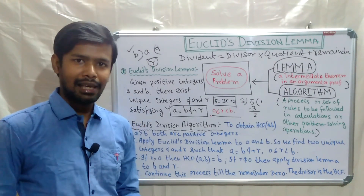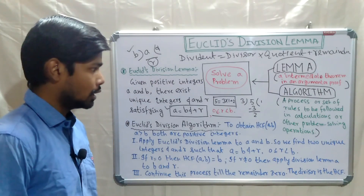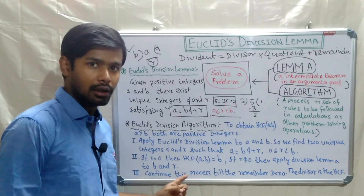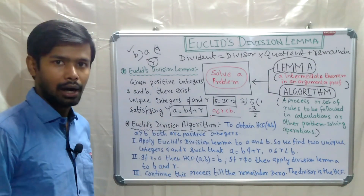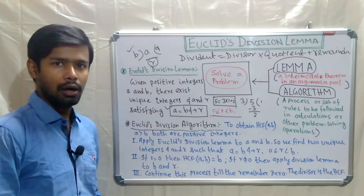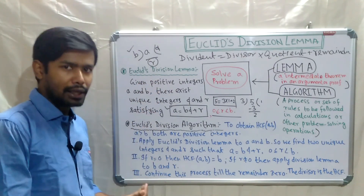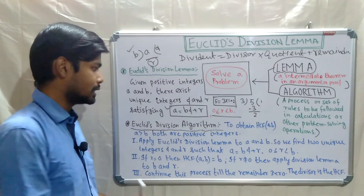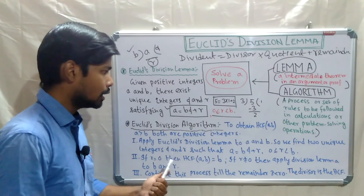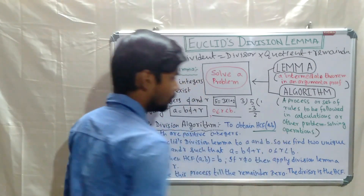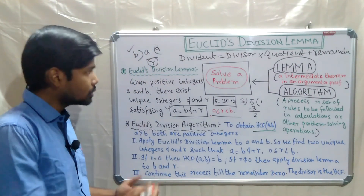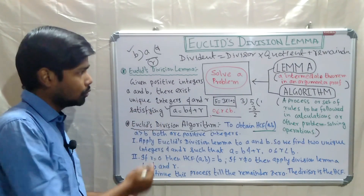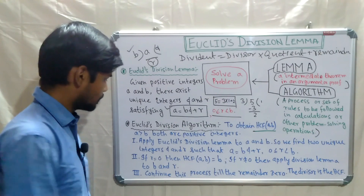Euclid's division algorithm is used to find the HCF of any two numbers. This is one important application of Euclid's division lemma — we use the lemma step by step to find something, and that process is called Euclid's division algorithm. To find the HCF of a and b, we apply Euclid's division lemma repeatedly.